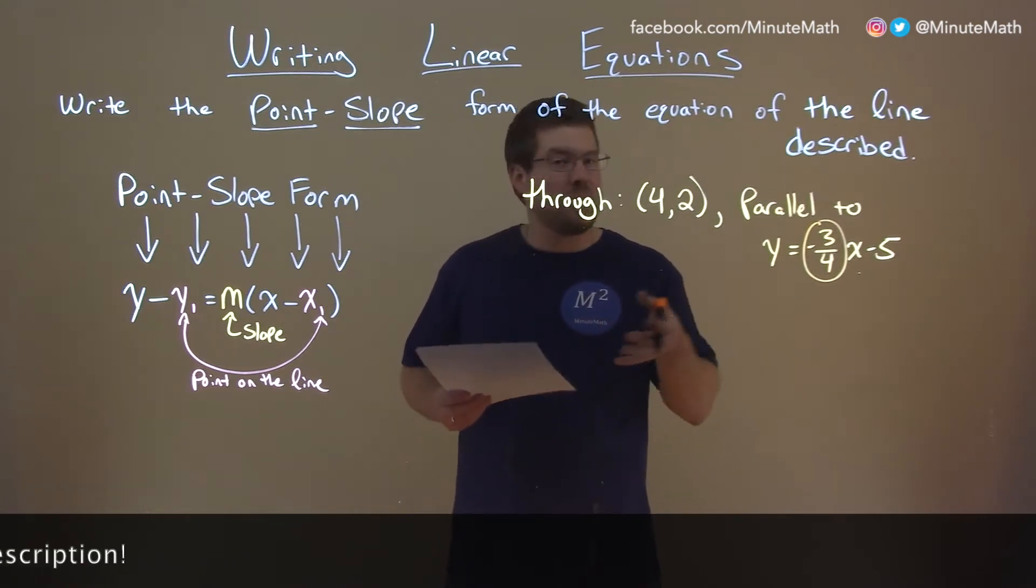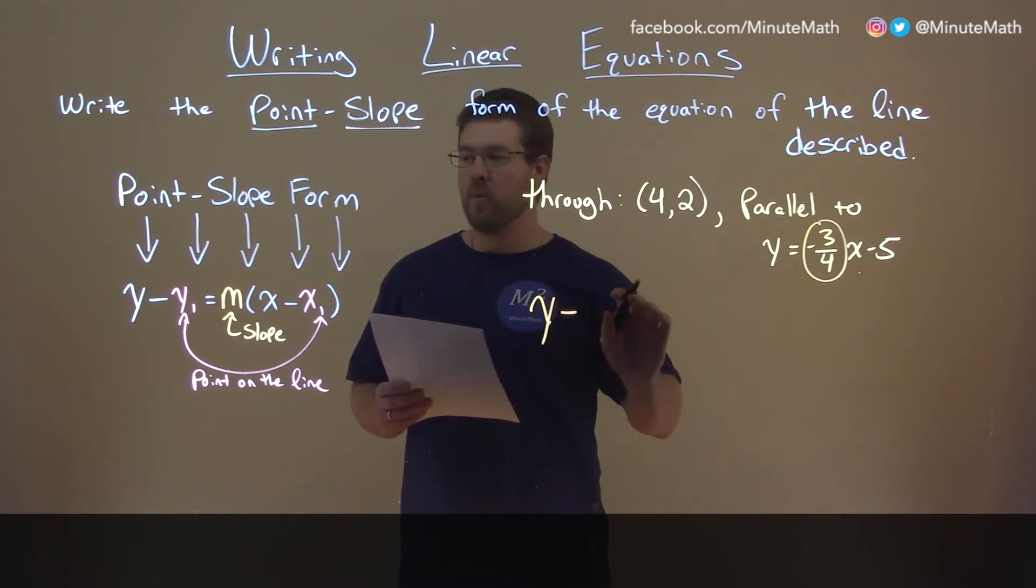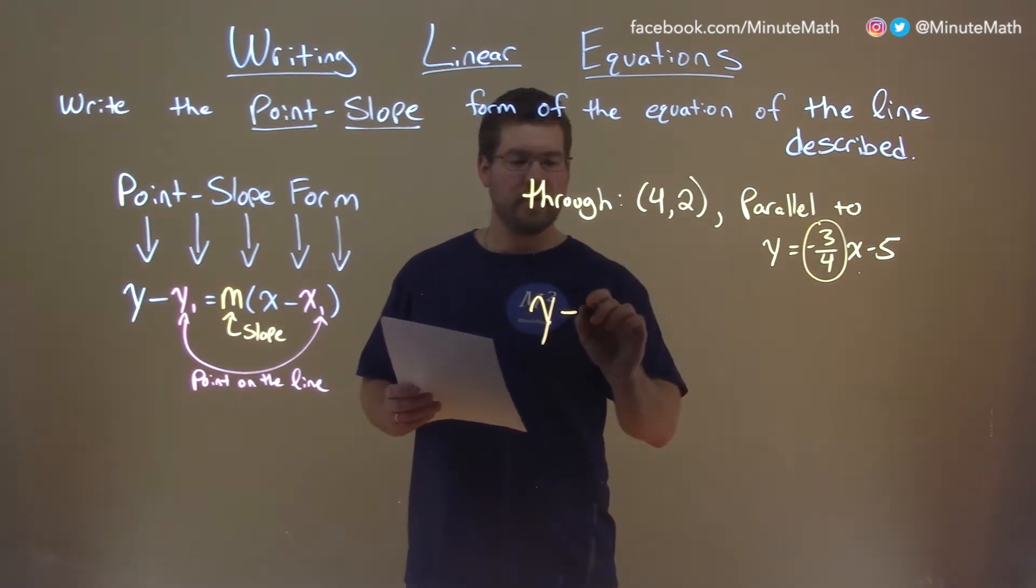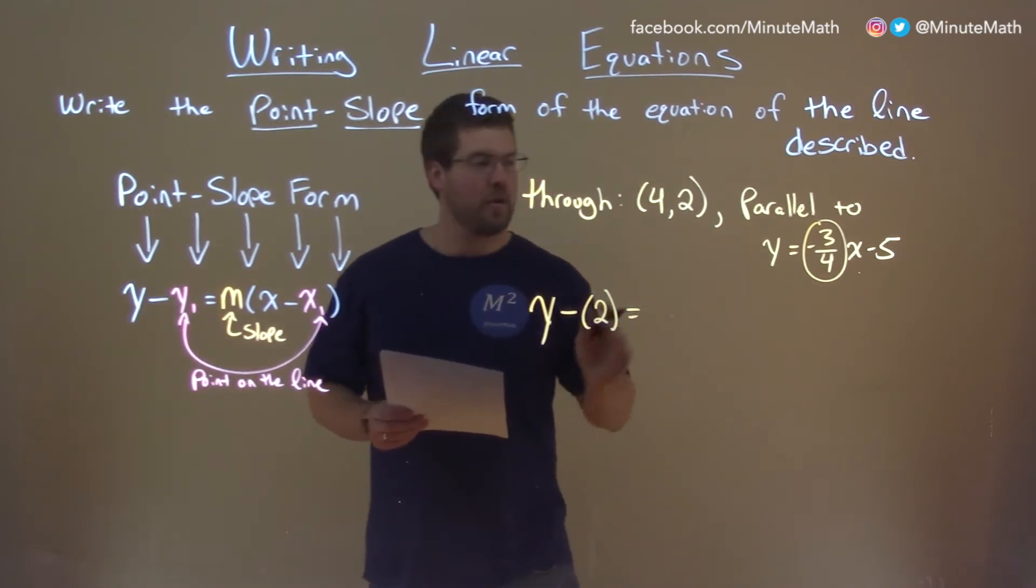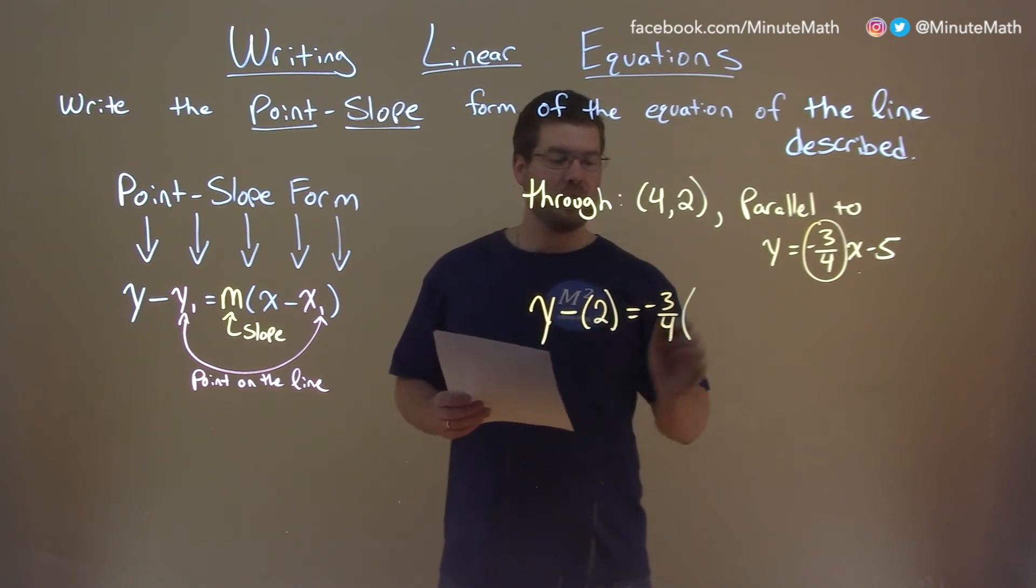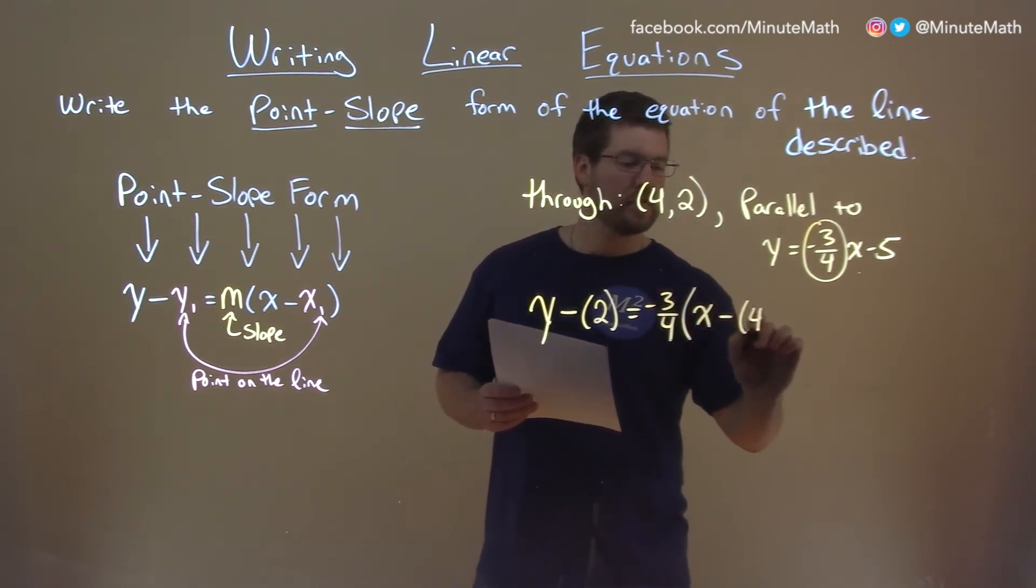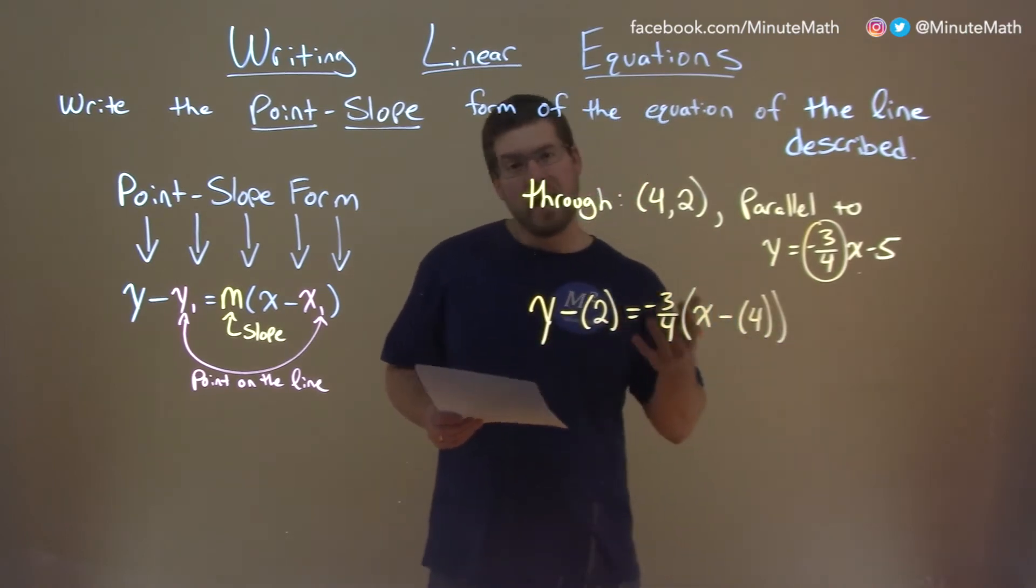With that information we actually can put it all together. We have y minus y1 which is a point that's given here which is 2 is equal to our slope negative three-fourths times x minus x1 which is 4 here and there we have our answer.